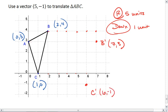And finally A - 1, 2, 3, 4, 5, and 1 down. A prime is at (5, 2).